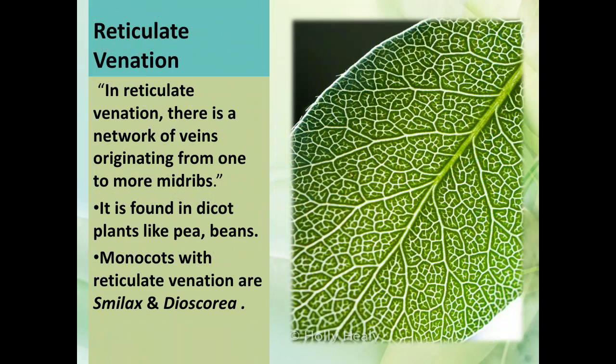Reticulate venation: in reticulate venation, there is a network of veins originating from one or more midribs. It is found in dicot plants like pea and beans, and also in monocots with reticulate venation such as Smilax.